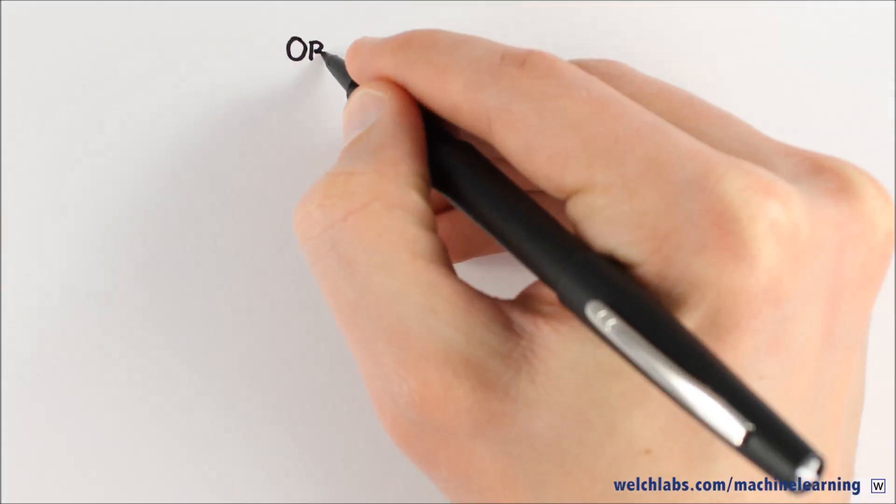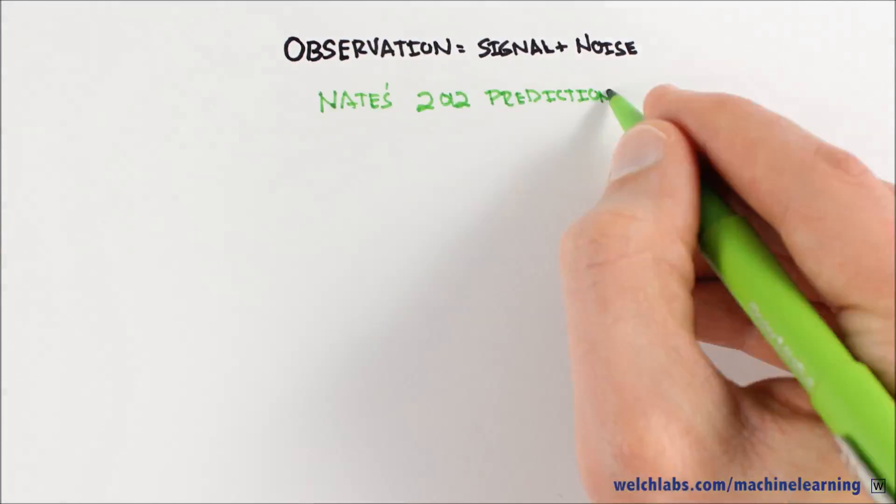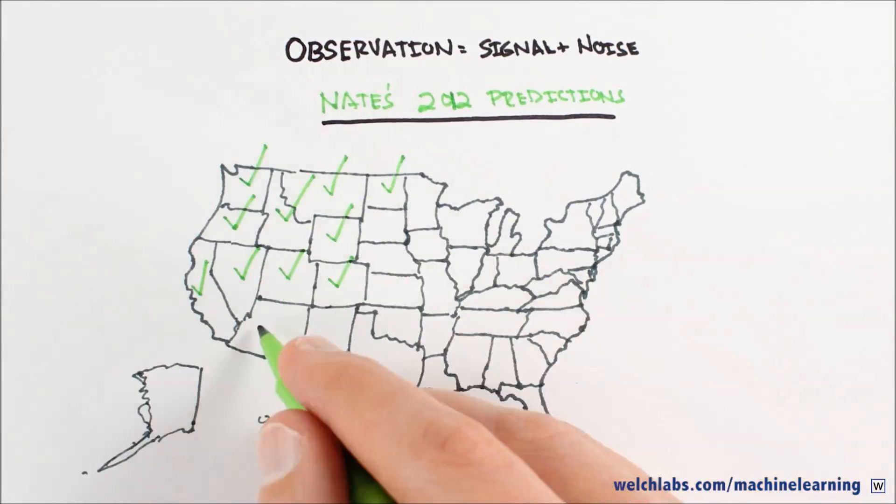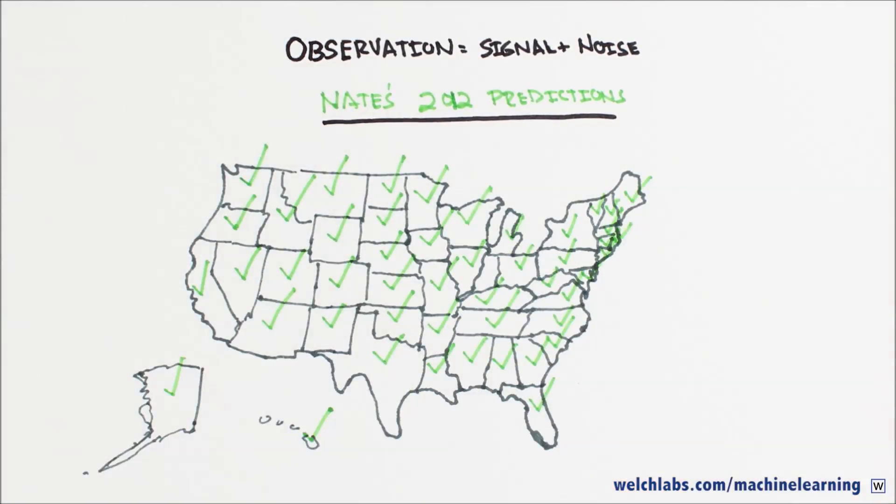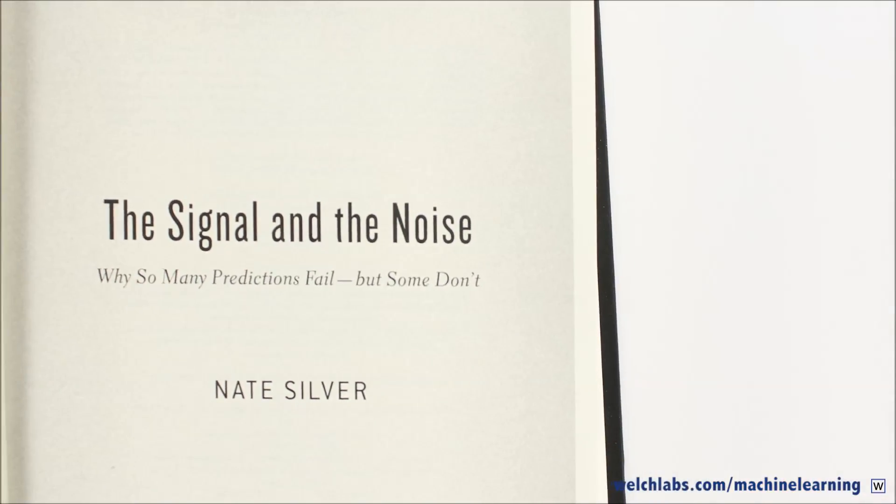One way to think about this is that observations are composed of signal and noise. Nate Silver, the guy who correctly predicted the US election results for 50 out of 50 US states in 2012, wrote a great book on exactly this. The idea is that we're interested in an underlying process, the signal, but in real data our signal will always be obscured by some level of noise.